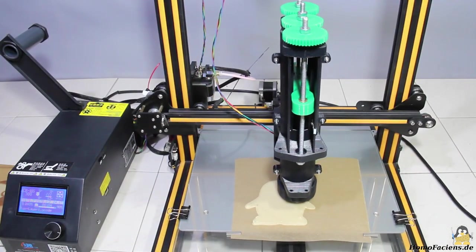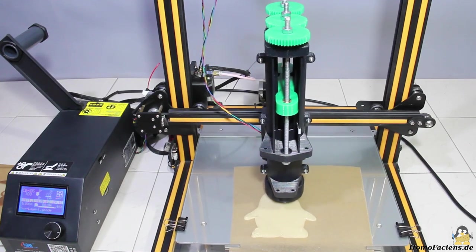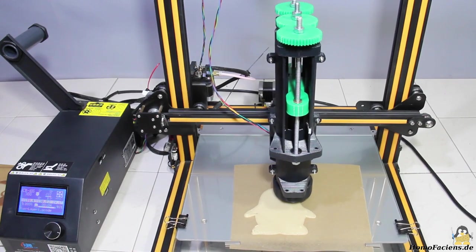In the following experiments I played around with the printing parameters and the dough composition. Printing at 20mm per second also works quite well.